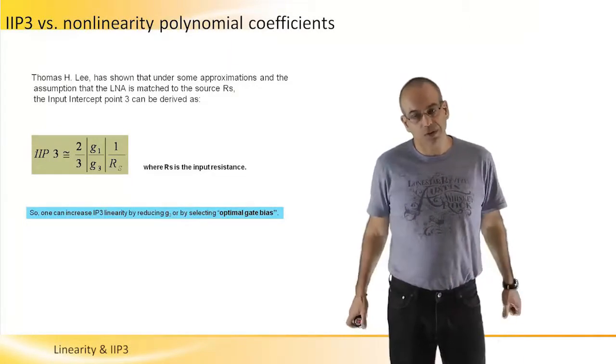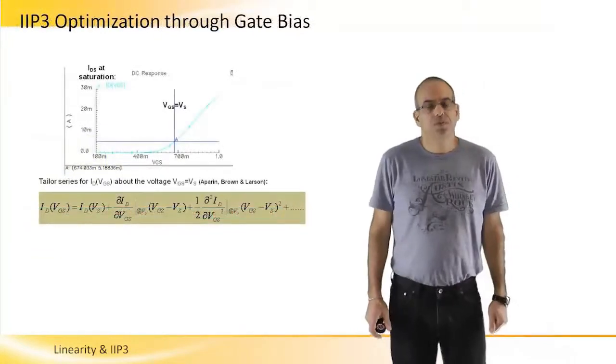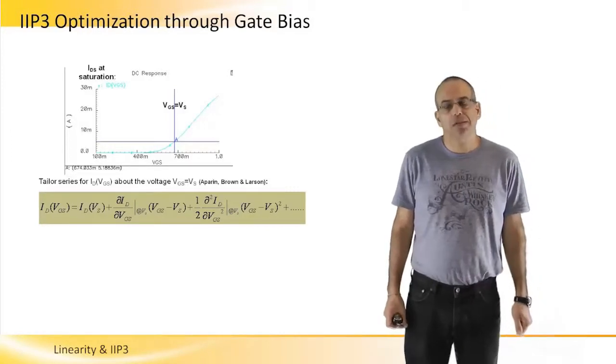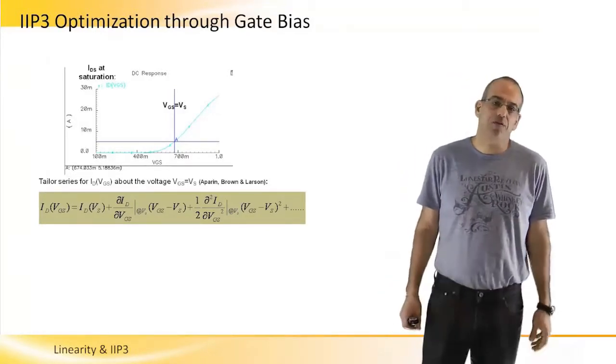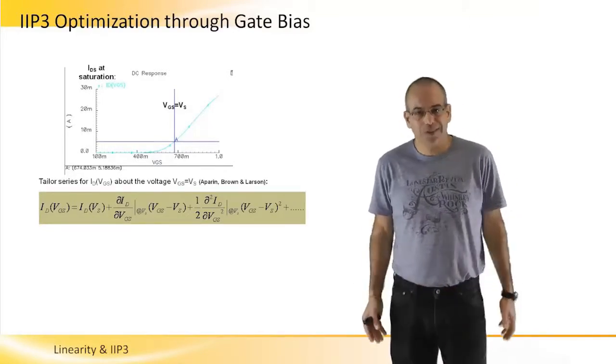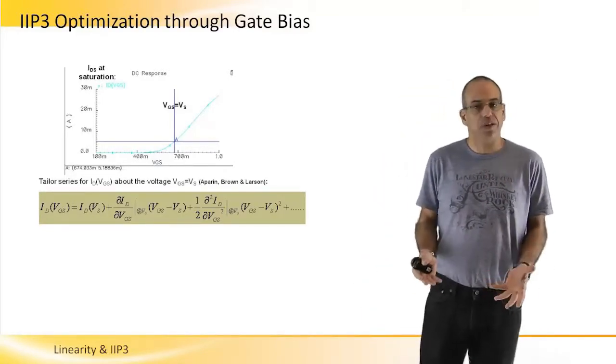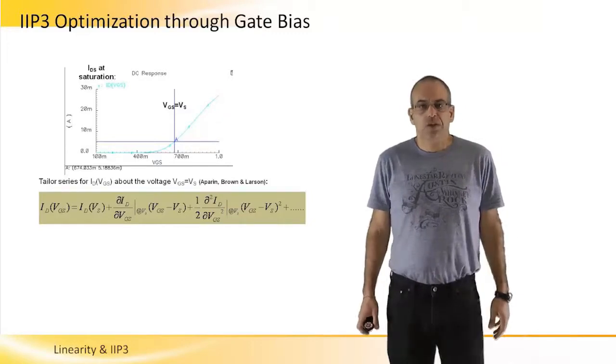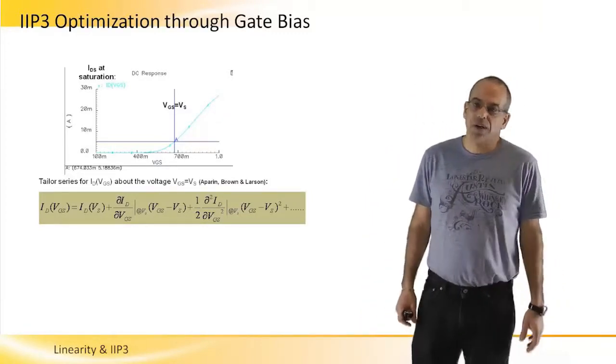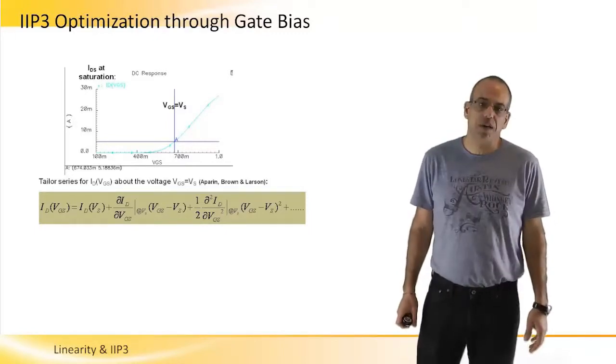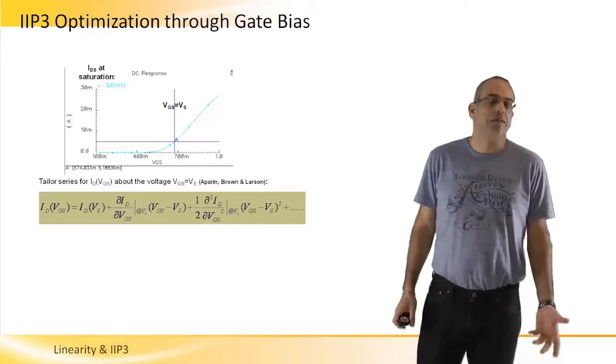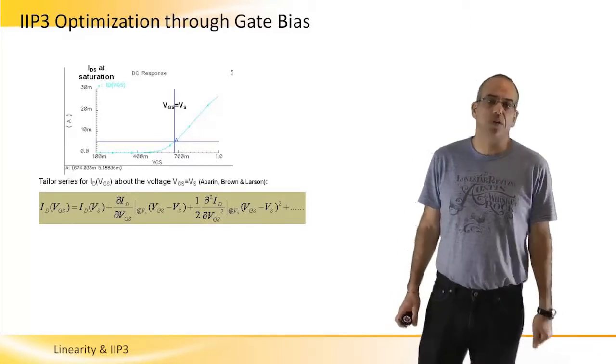So let's see how we do it. One way to optimize linearity through gate biasing is to find the optimal VGS of the transistor that will produce the most linear operation point. So in San Diego University, Aparin, Brown and Larson has published a paper a few years back describing a way to find this optimal VGS.